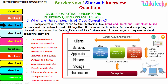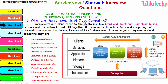The main components include Software as a Service, Platform as a Service, and Infrastructure as a Service. There are 11 major categories in cloud: storage as a service, database as a service, information as a service, process as a service, application platform, integration, security, management, testing, and infrastructure. Examples include Google App Engine and Mosso for SaaS; Gmail and Salesforce for platform; and Amazon Web Services and Rackspace for infrastructure as a service.